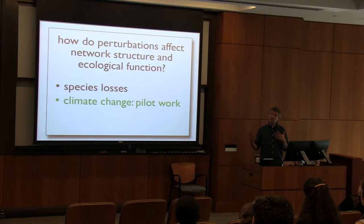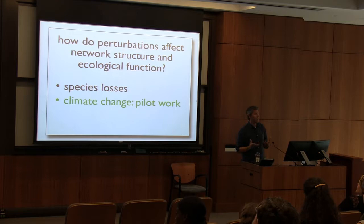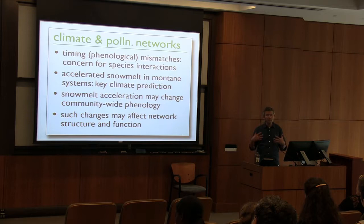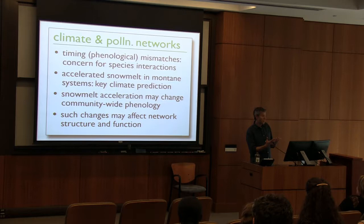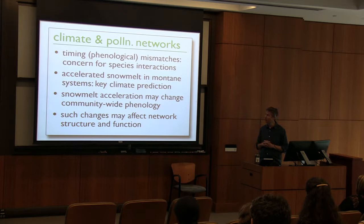Another area we're interested in, in terms of human-caused perturbations to these networks, is climate change. One of the big concerns when thinking about the ecological impacts of climate change has to do with the timing of biological events — what ecologists call phenology. There's a lot of concern about mismatches in the timing between interacting species. In pollination, if a plant blooms and its pollinator isn't there to pollinate it, that's going to be bad for that plant. A lot of species use different environmental cues to time their biological events, and in the past those cues have been very correlated — but with climate change, they're becoming less and less correlated.